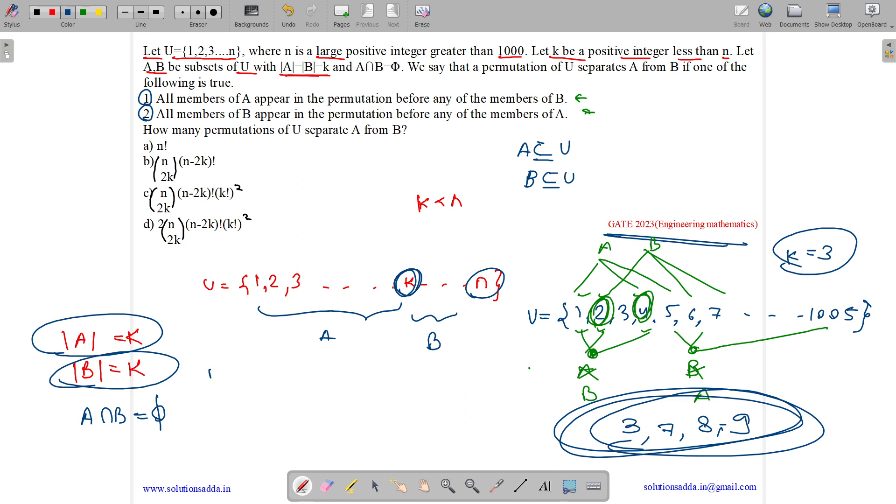First, out of these all items, we need to select A and B. A and B has size k and k, which means total 2k elements. We need to select 2k elements from them. How many elements are left? n minus 2k are left. Do we have any restriction on them? No, we have restriction only on the items of A and B, which means these n minus 2k elements can be permitted in any number of ways.